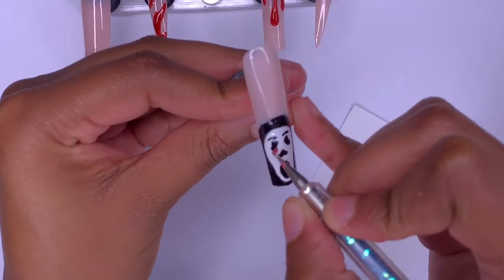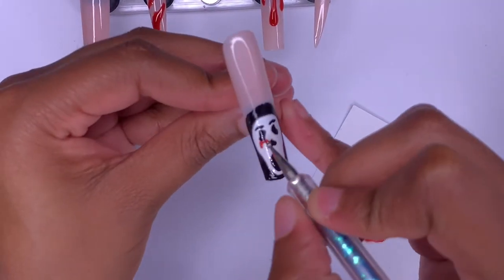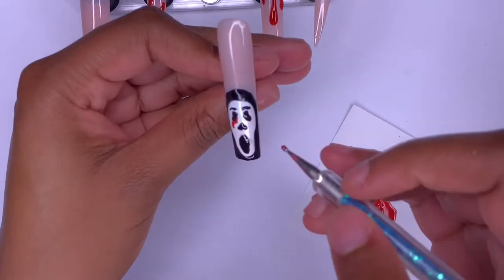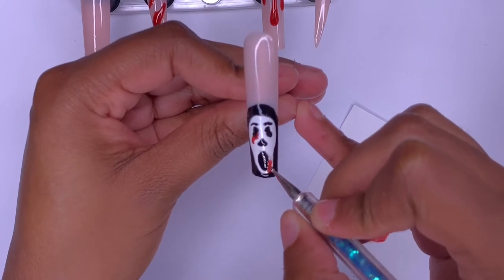Once I was finished with the face, I went ahead and cured it in the lamp and then I decided to go back in and add some blood to the mask. I'm just putting some next to the eye and then on the opposite side around the mouth.